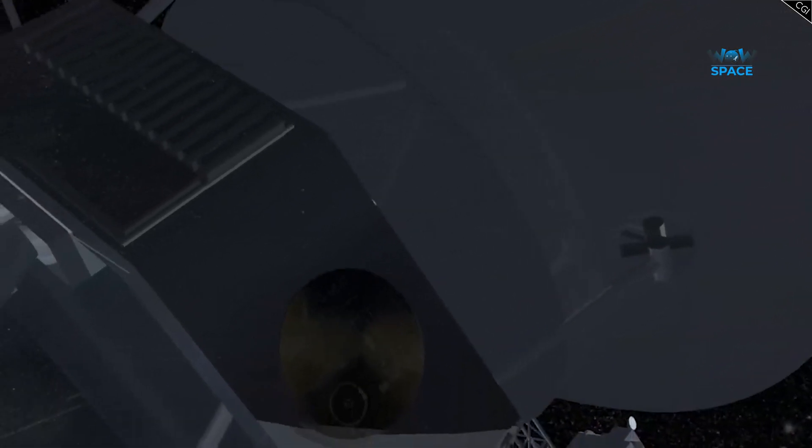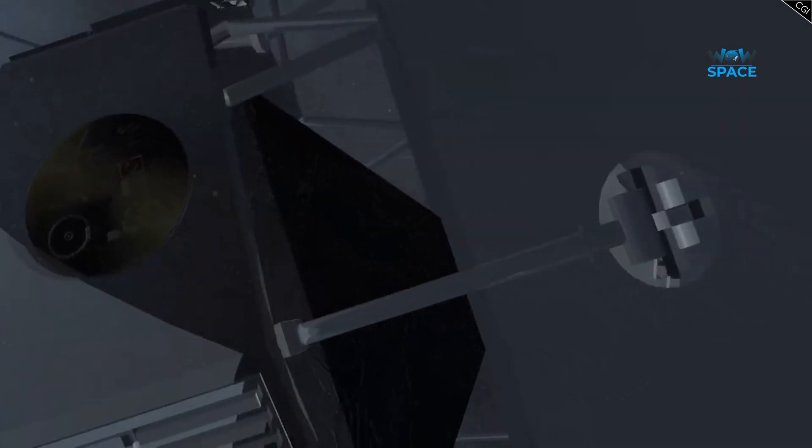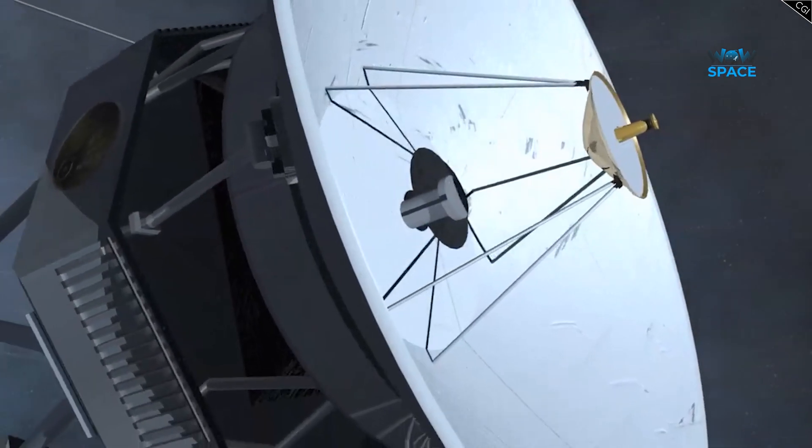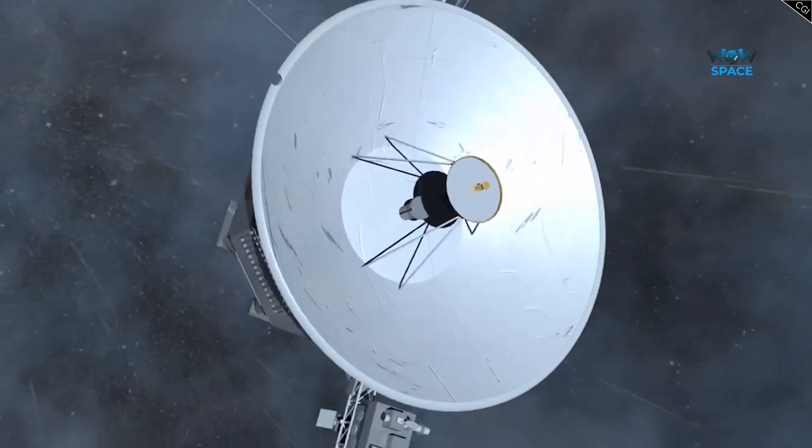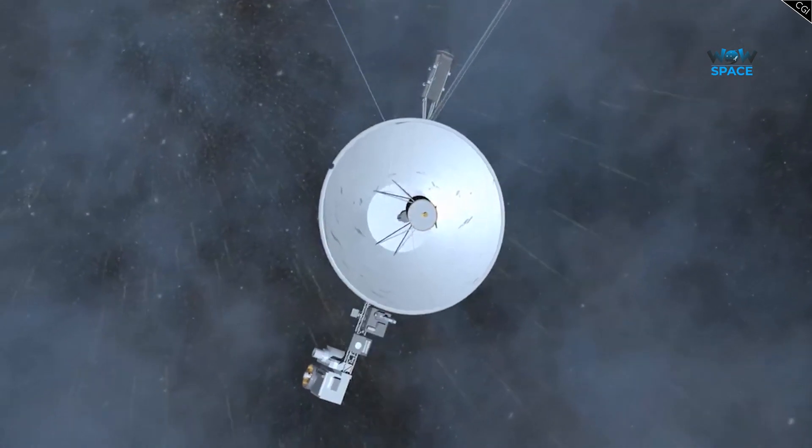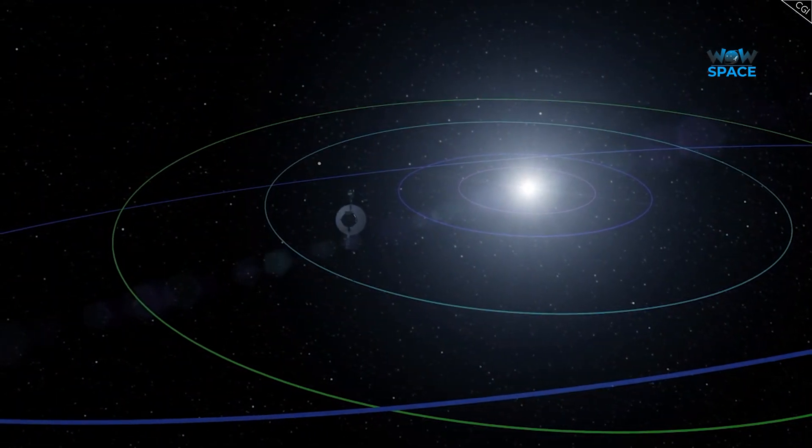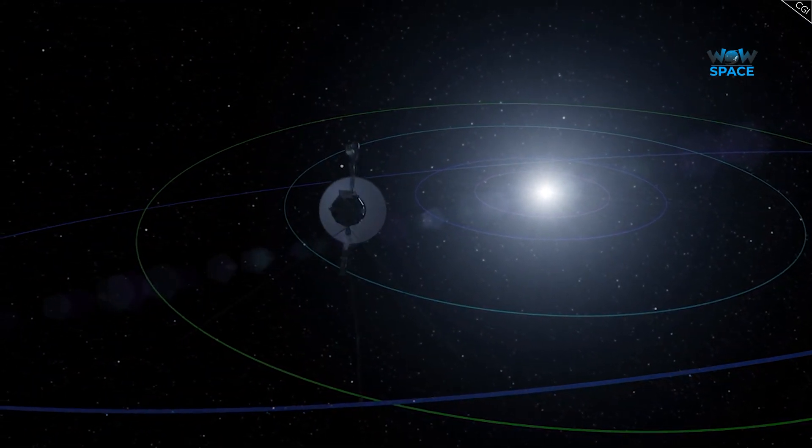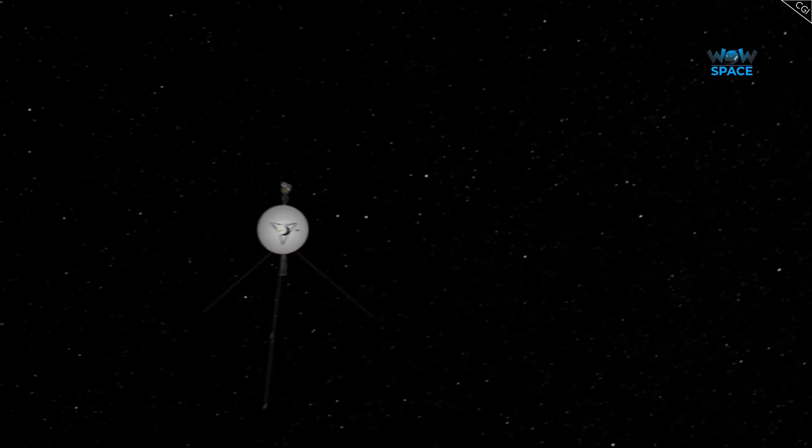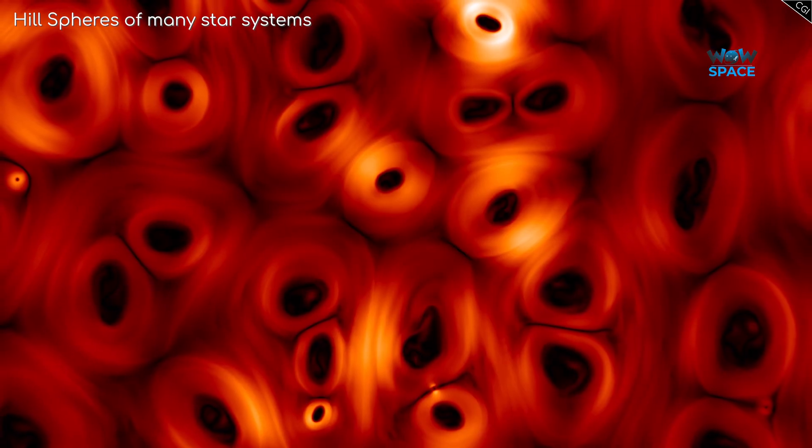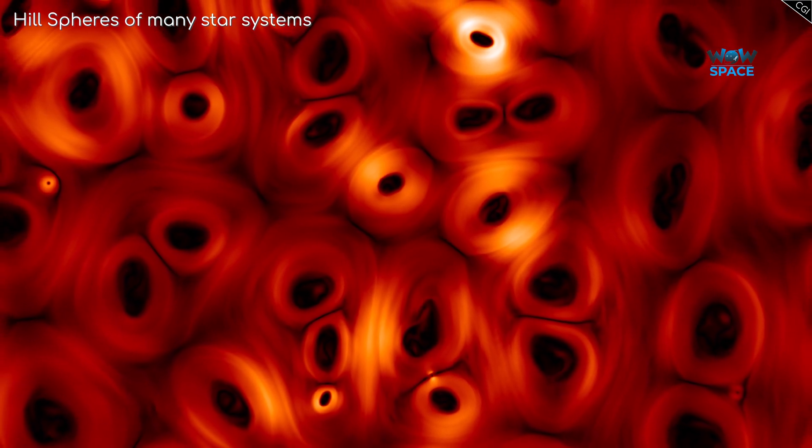To give you some perspective about the size of this cloud, it will take Voyager 1 300 years just to reach the beginning of the Oort Cloud, and potentially 30,000 to 150,000 years to pass through it. Astronomical distances are simply mind-blowing. And remember, at this distance we are considered to still be within our own solar system. Now imagine how many solar systems there are out there!